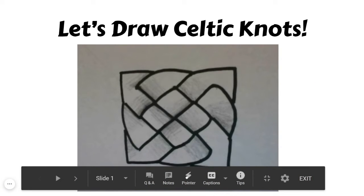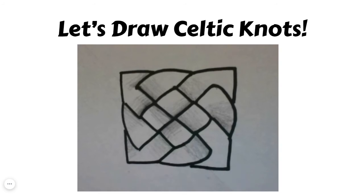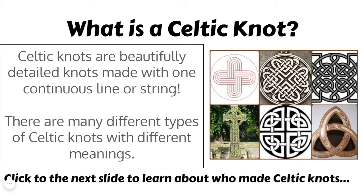Hello third grade artists. This week we're going to draw Celtic knots. So let's talk about what a Celtic knot is. Celtic knots are these beautifully detailed woven together knots that are made with one continuous line or rope or string. There are many different types and there are different ideas about what the different types mean.